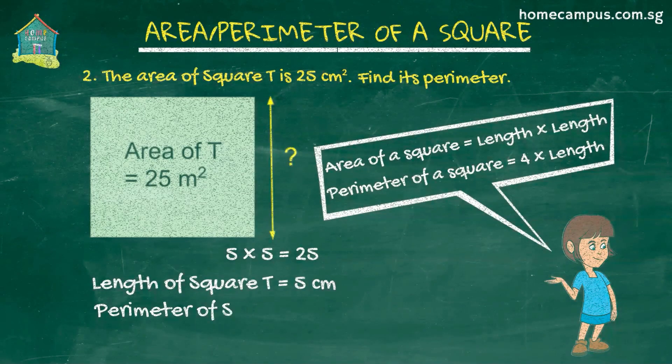Perimeter of square T is 4 times the length of the square. So 4 times 5 or 20 centimeters. And that's the answer to this question.